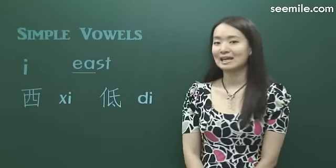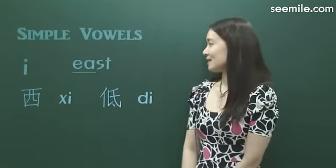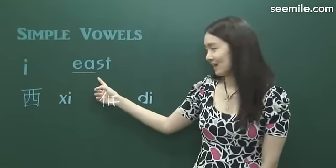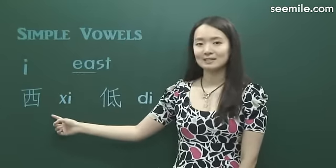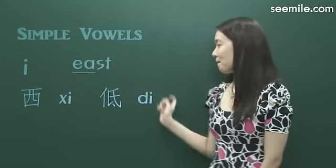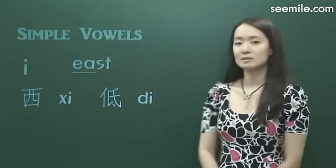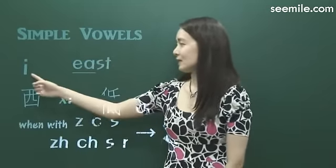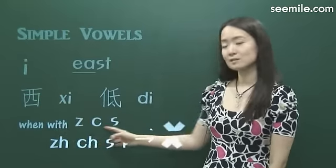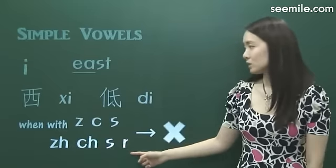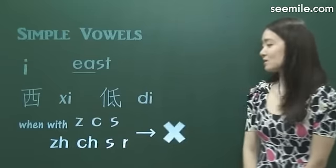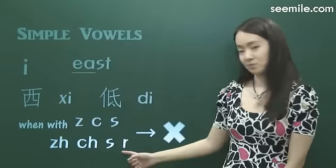The next one is 伊. 伊 is like the 'ee' in 'east' — it's very close to the first sound of 'east', like in 西 and 地. It's pretty simple. But please remember, because when 伊 comes after some consonants like 自, 自, 自, 日, the 伊 sounds different — it doesn't sound at all with these consonants.